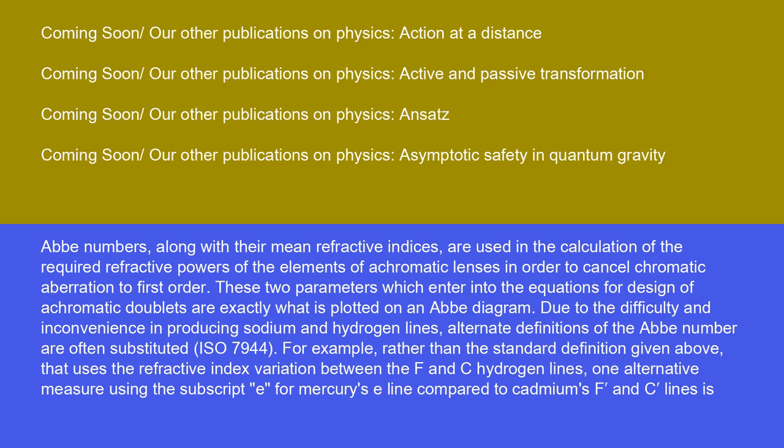Glasses' Abbe numbers, along with their mean refractive indices, are used in the calculation of the required refractive powers of the elements of achromatic lenses in order to cancel chromatic aberration to first order. These two parameters which enter into the equations for design of achromatic doublets are exactly what is plotted on an Abbe diagram.